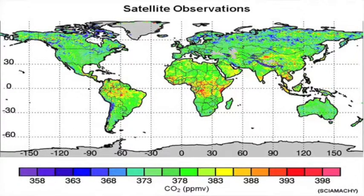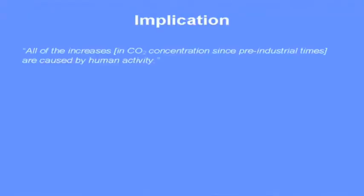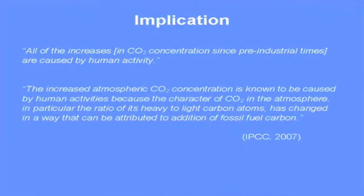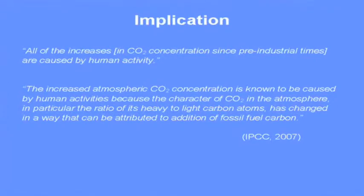Local values of CO₂ are therefore a good approximation to its global mean, which in turn provides the history of net global emission. The IPCC has proclaimed that all of the increase in CO₂ since pre-industrial times is caused by human activity, because the ratio of heavy to light carbon atoms has changed in a way that can be attributed to addition of fossil fuel carbon.